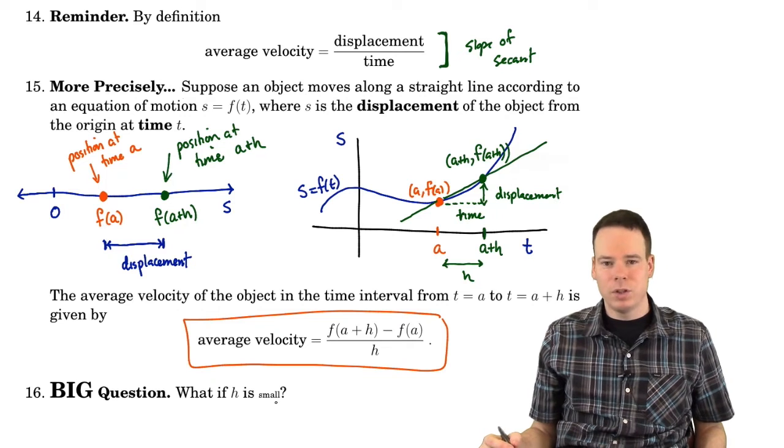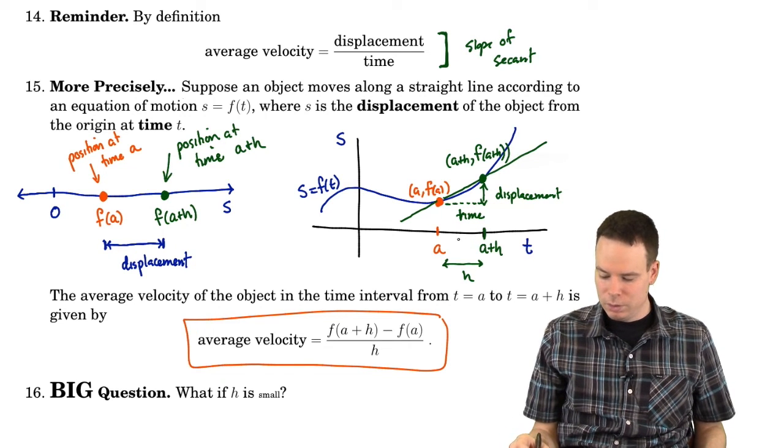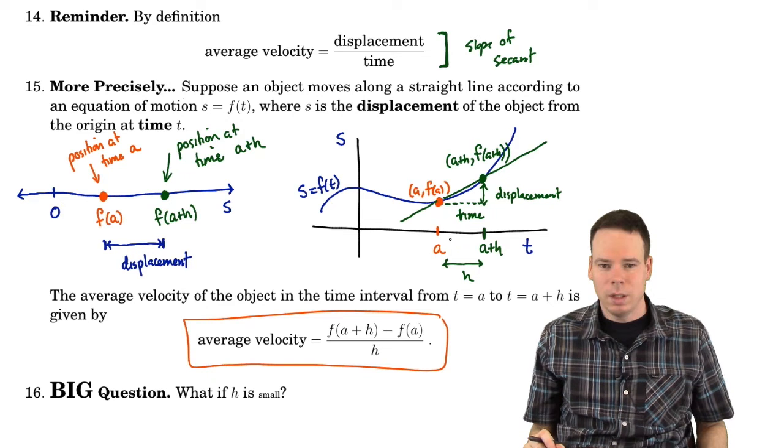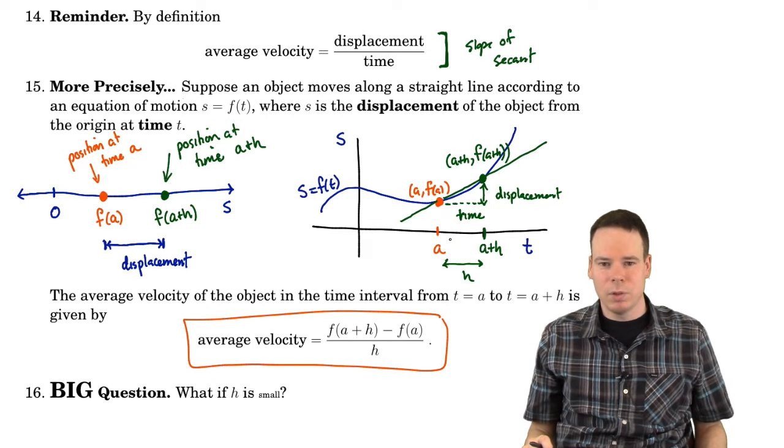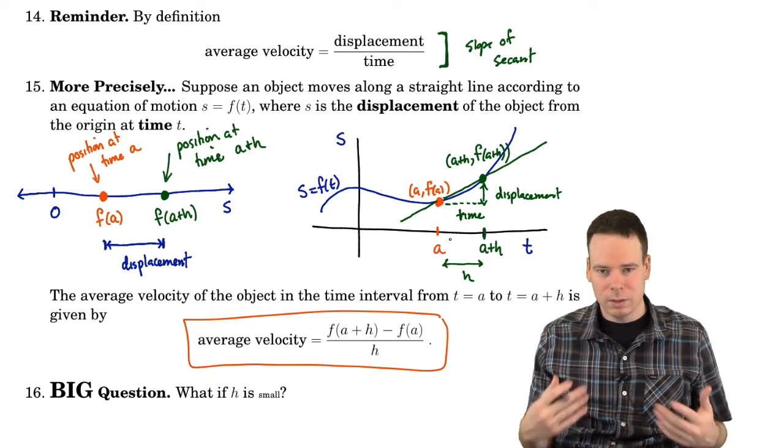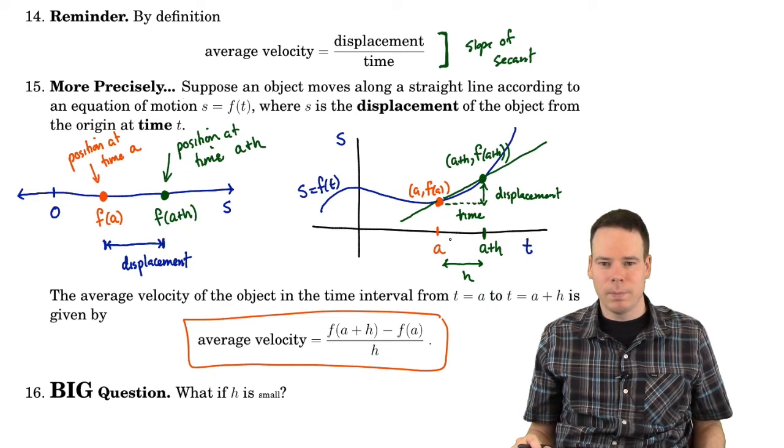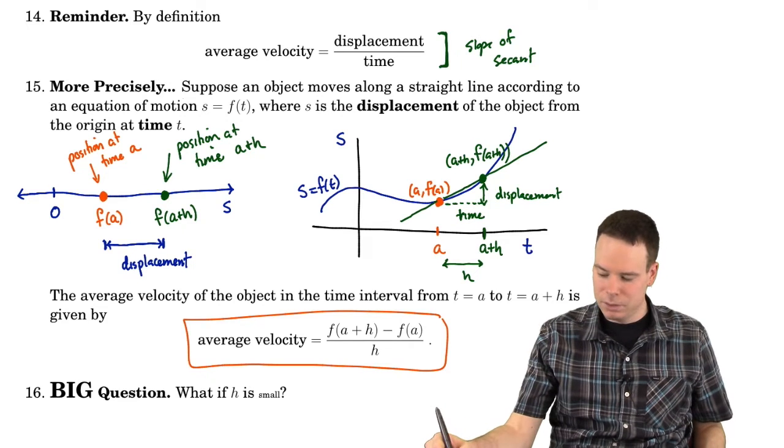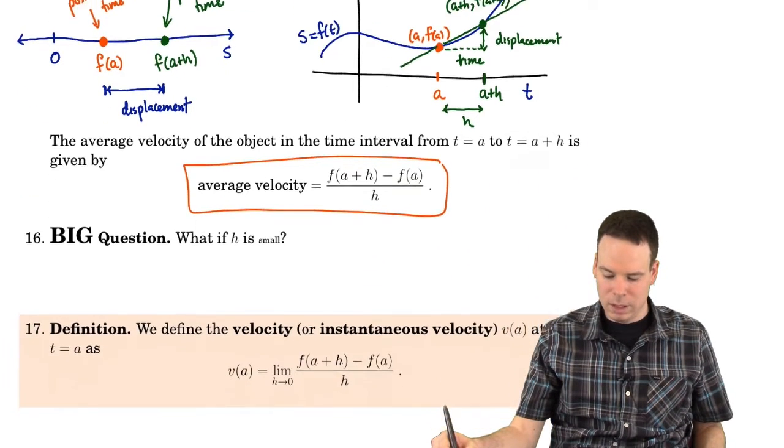So what we have is that the average velocity can be interpreted as the slope of the secant line through those two points. So the big question is what if h is small? What if h is small? We take h to be closer and closer and closer to zero.